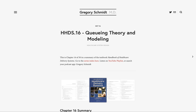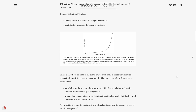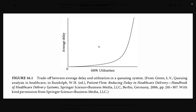Let's move on to utilization, delays, and system size. Utilization is simply the average number of busy servers divided by the total number of servers times 100. Two really important takeaways on general utilization principles. As the utilization increases, the average delay or the wait list increases. It is important to realize that as utilization increases, the queue grows faster, meaning the relationship between utilization and delay is not linear but in fact exponential. There is a kick to the curve or an elbow where at a certain utilization, the rate of increase of the queue length dramatically increases.